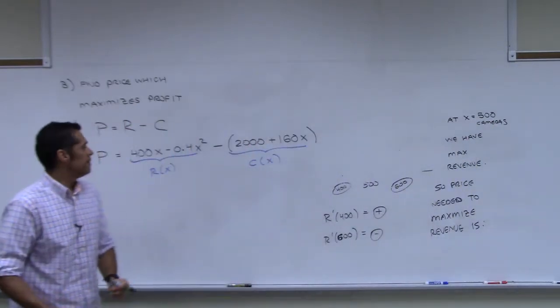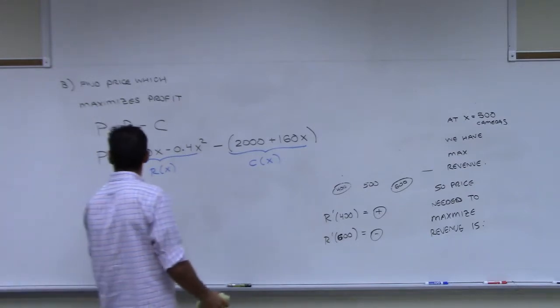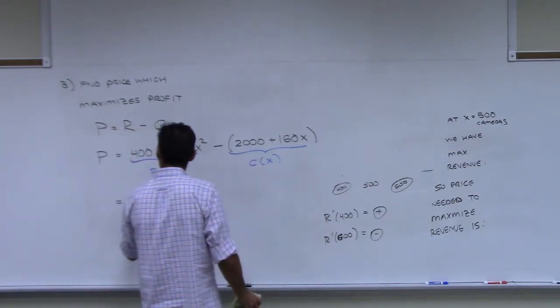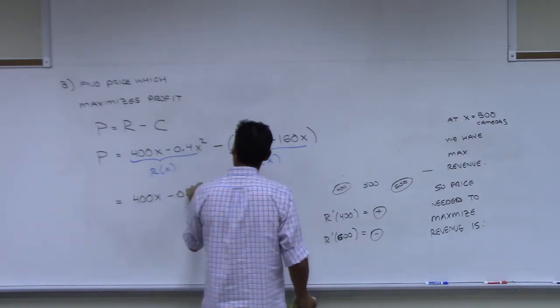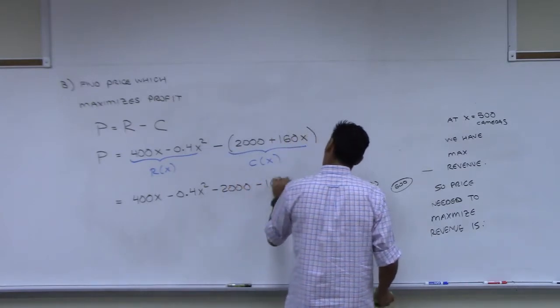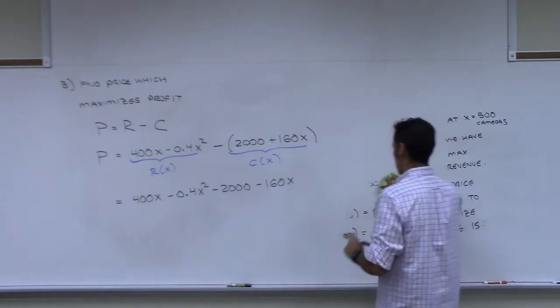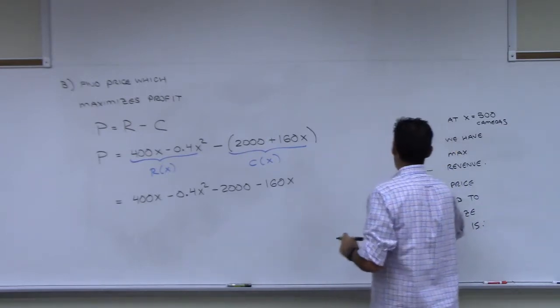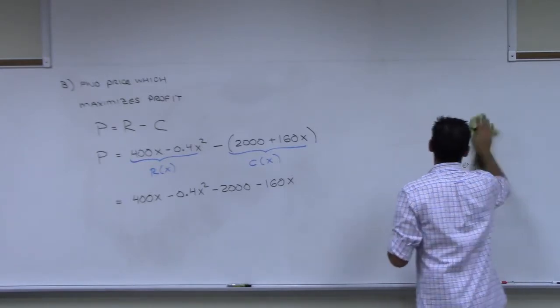That's my profit function. So let's go ahead and distribute the negative through, clean things up. Any questions on what I'm doing? So distribute that negative through. And now let's collect like terms together.